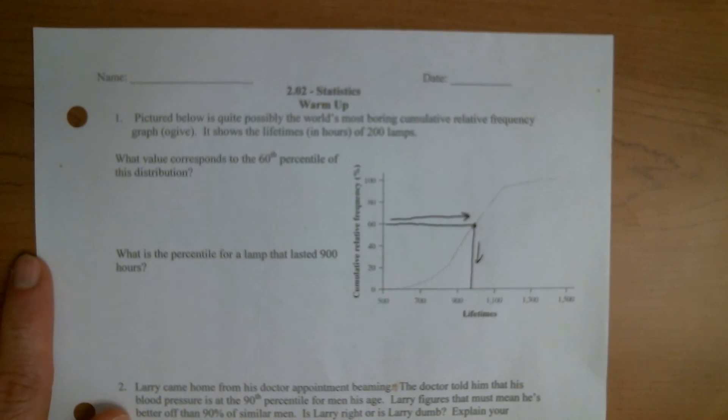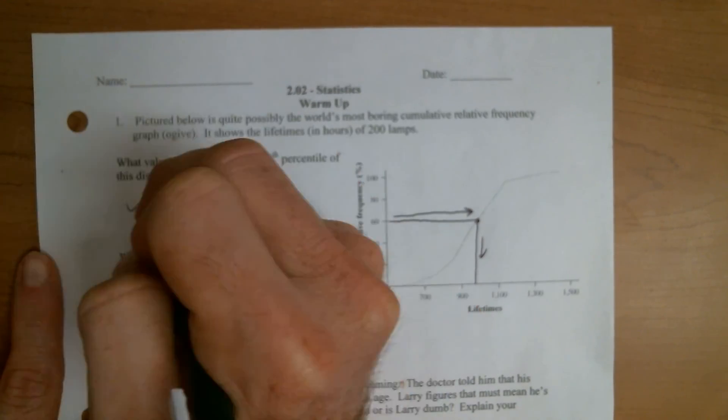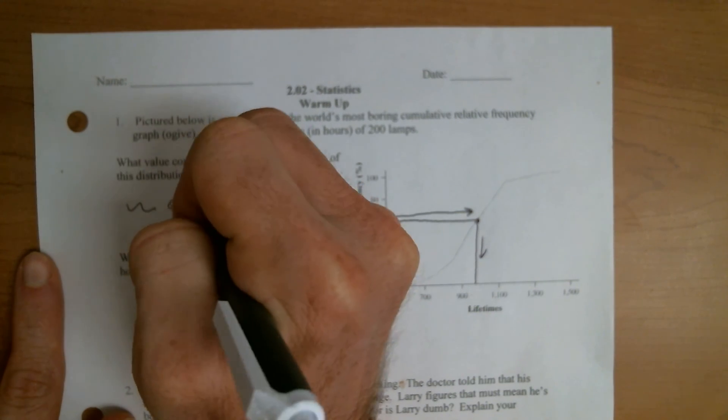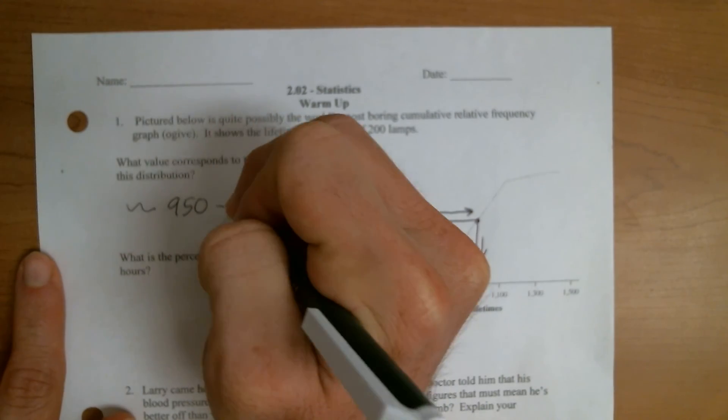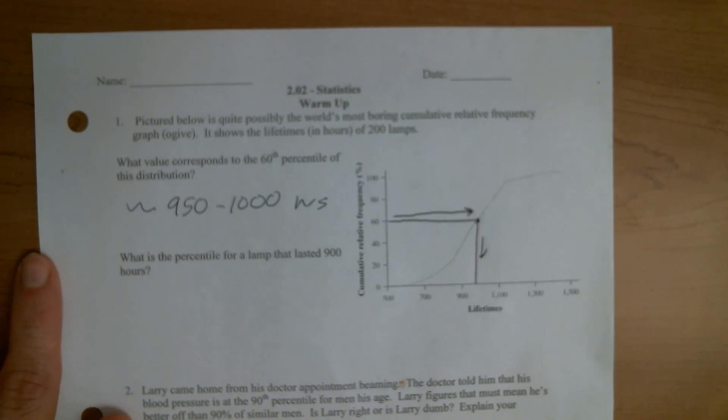So for this one, again, depending on how you drew your lines, you're probably somewhere in like the 950 to 1000 hours range. You might be a little higher, you might be a little lower. Again, I'm more focused on, do you know how to draw the lines? Do you understand how to read one of these graphs?